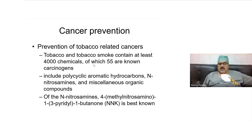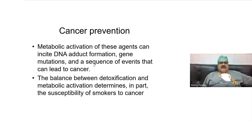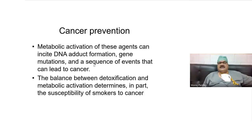These are pre-carcinogens that are activated in the body by the cytochrome P450 or CYP1A system into carcinogens, which are then metabolized by the glutathione S-transferase system to neutralize them. Whenever there is an imbalance between the glutathione S-transferase and the cytochrome system, carcinogenesis occurs. These chemicals cause DNA adduct formation and gene mutations, leading to cancer. The balance between detoxification and activation determines susceptibility.